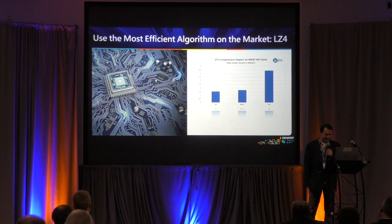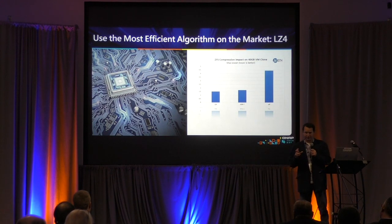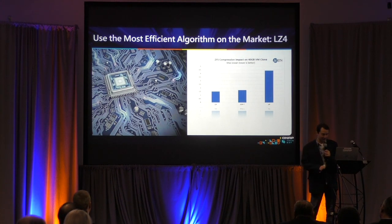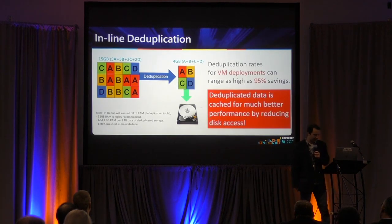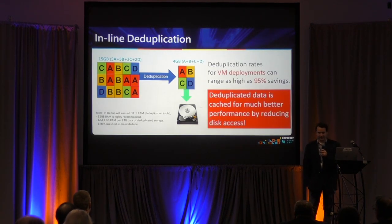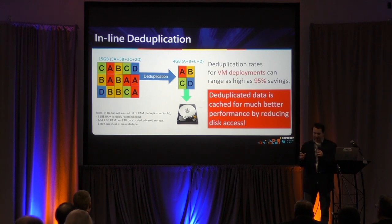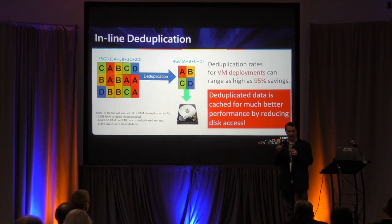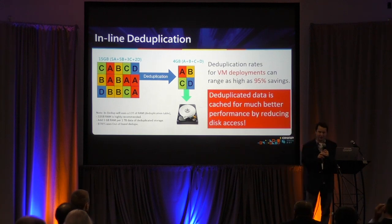We support LZ4 compression — that's a very good level of compression and it's very fast and high performance. Compression is going to help you get higher performance. We also support inline deduplication. It's important that we support both, because certain types of files will benefit a lot from compression but not much from deduplication, and other kinds will benefit greatly from deduplication but not as much from compression.